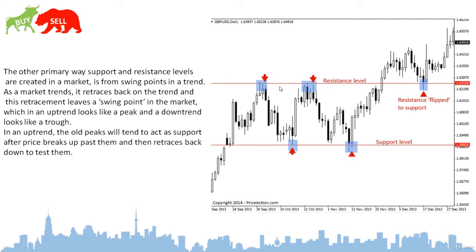The sellers entered at the resistance and the market dropped down to the previous support. The market then reacted, going up to the resistance again — ranging between the support and the resistance — until the market broke up through the previous resistance. Once broken, that resistance becomes a support line, which will support the market as it starts trending up.